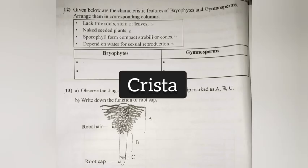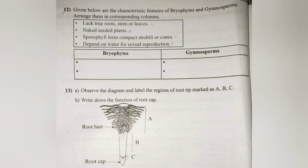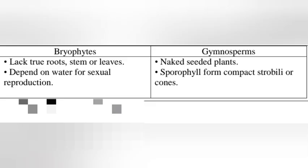Question 12: Given below are the characteristic features of bryophytes and gymnosperms. Arrange them in the corresponding columns. Answer — Bryophytes: lack true roots, stem, and leaves; depend on water for sexual reproduction. Gymnosperms: naked-seeded plants; sporophylls form compact strobili or cones.